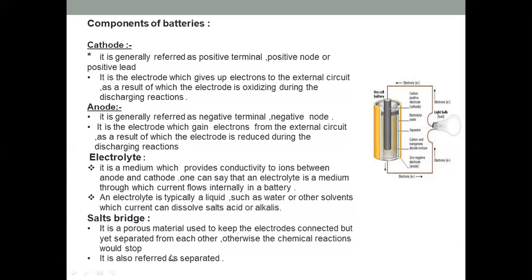So the components of the battery are: cathode, anode, electrolyte, and salt bridge. Here we can see a dry cell battery, with the cathode here and the electrolyte here.